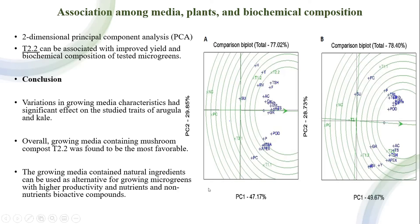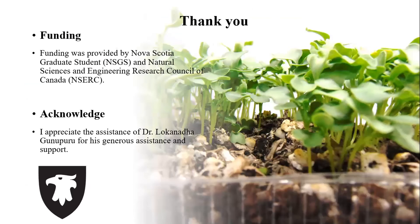As suggested by this study, treatment 2.2 can be used as an appropriate alternative for growing and improving the quality of microgreen species. Thank you so much for your attention.